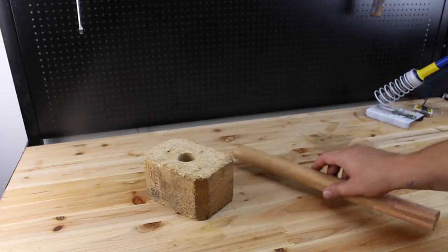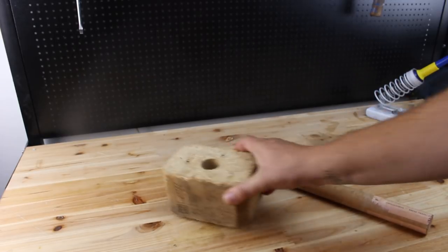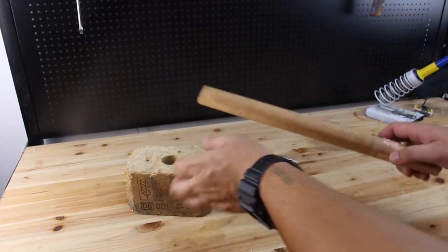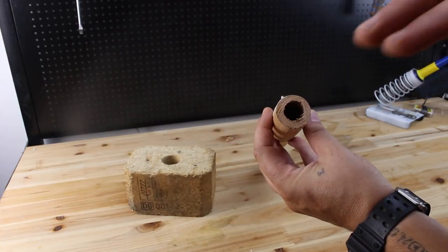We're gonna start with these two wooden pieces. This one is pulled out from wooden pellet and this cylindrical one has a hole in the center.